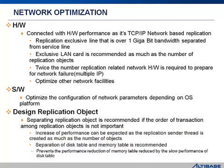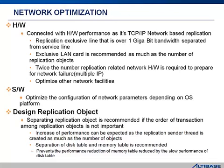When creating replication objects, it is better to separate the replication objects if the order of transactions among transactions is not important. The sender thread, activated for each replication object, converts and sends xlogs. So when multiple replication objects are used, sender threads are also activated in the same amount, improving replication performance. For example, when replicating 50 tables divided into two replication objects, they replicate 25 tables each, reducing the log one sender thread must handle by 50%.